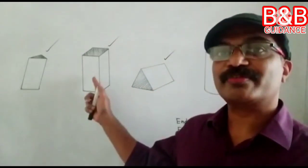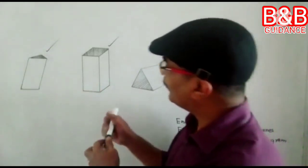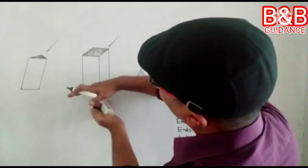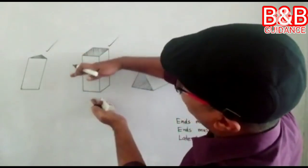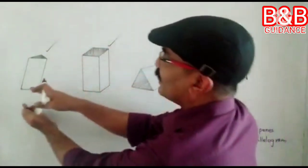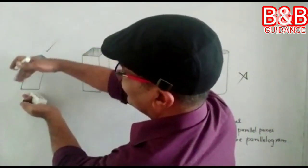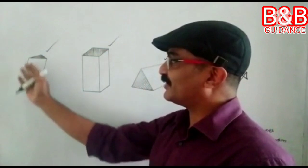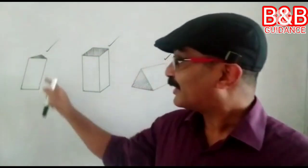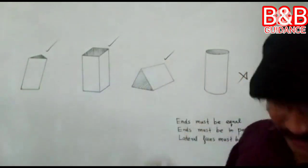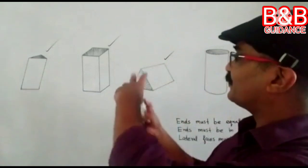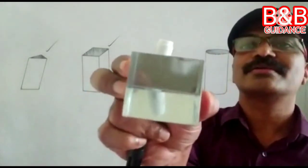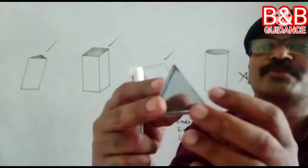Well, this is a right prism. Here, if you call this as the base, or the end face at the bottom, the upper face is just directly above the bottom face. But this other one is not like that — it is placed at an angle. So this lateral surface has a parallelogram shape. And here, this lateral surface will be rectangular. This face is a triangle, and this lateral face is a rectangle.